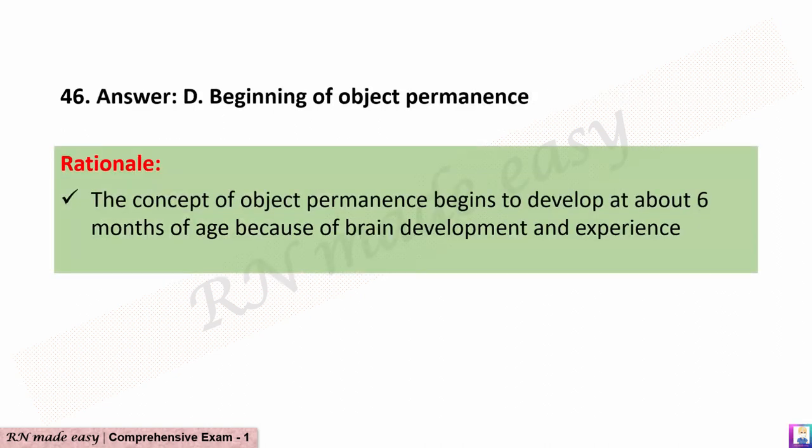The correct answer is D: Beginning of object permanence. Rationale: The concept of object permanence begins to develop at about 6 months of age because of brain development and experience.